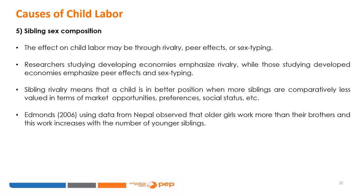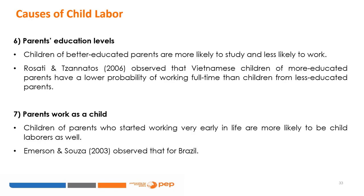Edmunds (2006), using data from Nepal, observed that older girls work more than their brothers and this work increases with the number of younger siblings. The sixth factor is parental education levels: children of better educated parents have more propensity to study and less propensity to work. Rezati and Zanatos (2006) observed that Vietnamese children of more educated parents have a lower likelihood of working full-time. The seventh factor is when parents started working as children — children of parents who started working very early in life are more likely to be child labourers. Emerson and Sousa (2003) observed this for Brazil.